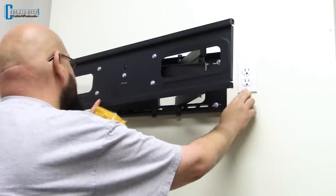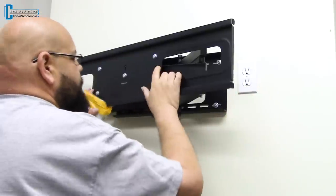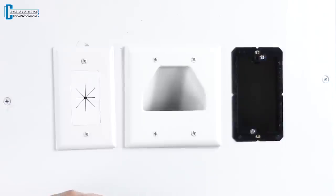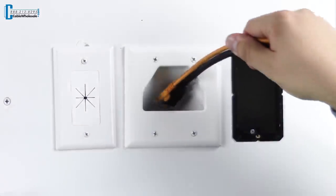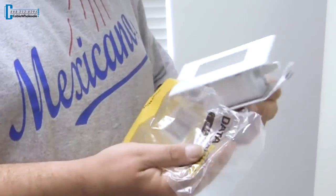Now in this scenario, we have already had a licensed electrician provide a power outlet to give power for the television. Now we are going to get the pass-throughs installed to run HDMI cables, ethernet, audio cables, and so forth.